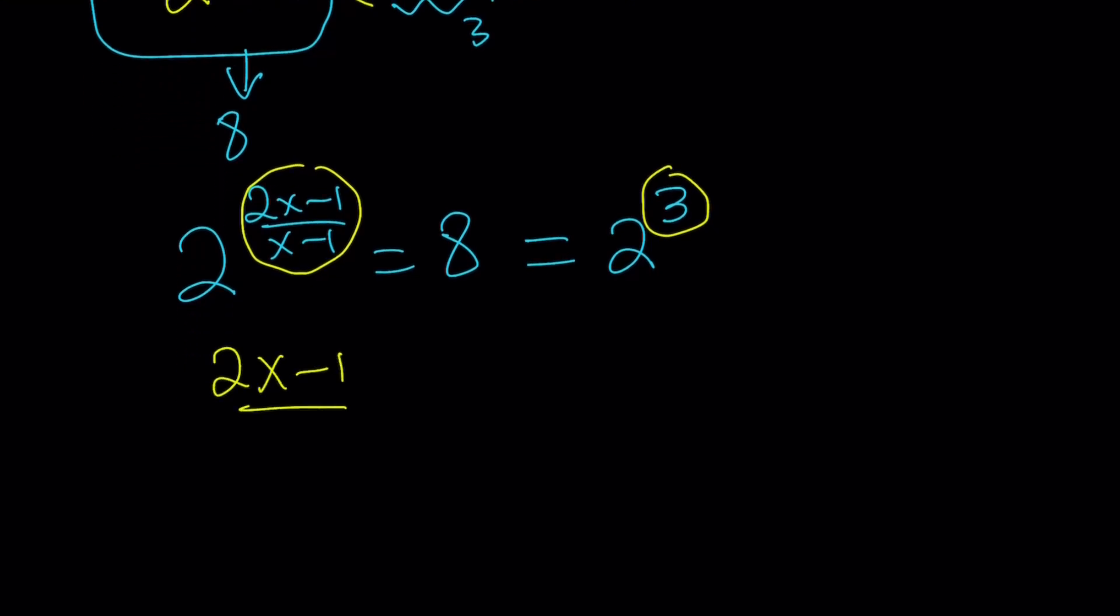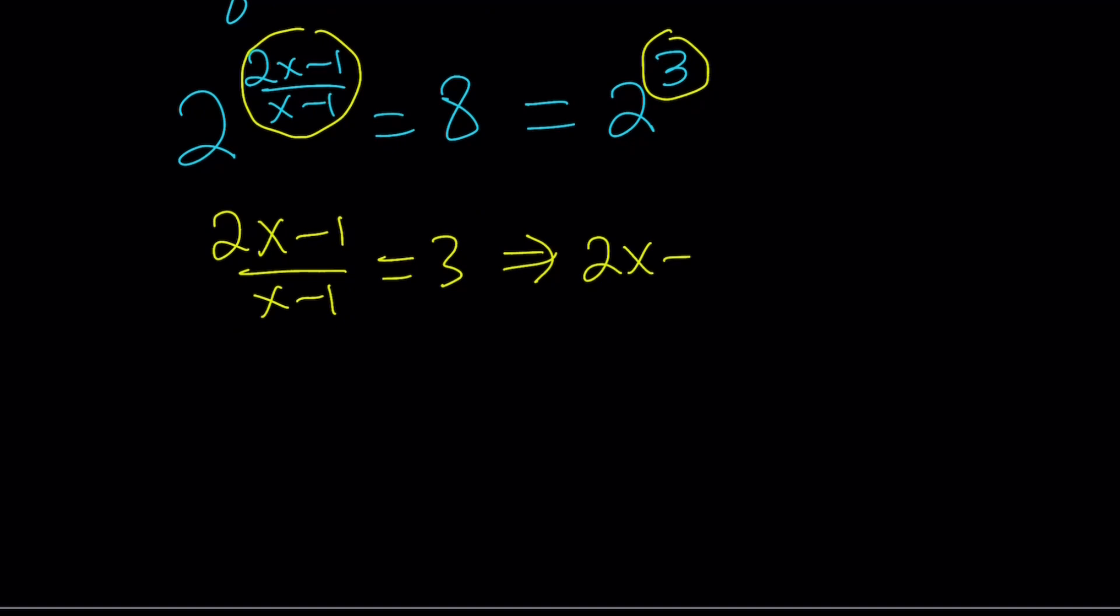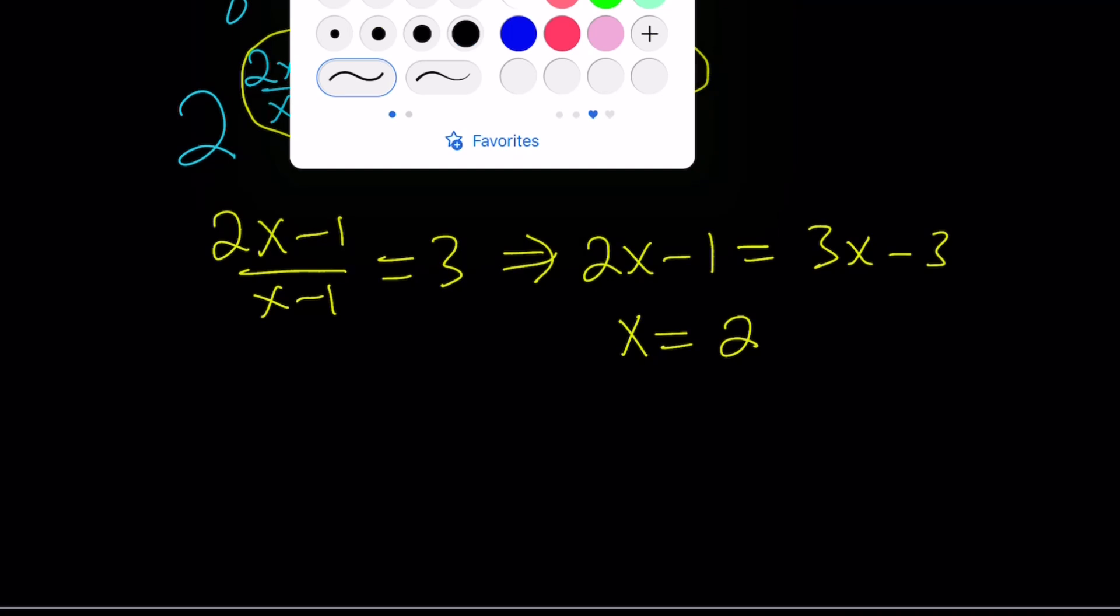Which means 2x minus 1 over x minus 1 equals 3. And from here, if we cross multiply, we get 2x minus 1 equals 3x minus 3. And by solving the simple equation, x equals 2 is going to be the answer.